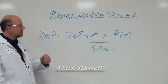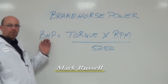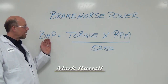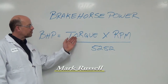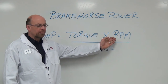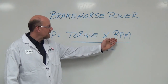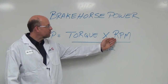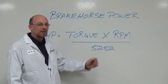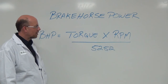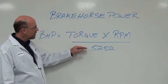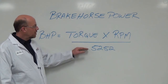Brake horsepower. When we take a look at the formula for brake horsepower: brake horsepower equals torque times the speed in the engine, which is the revolutions per minute — RPM — and then we divide that by 5252,